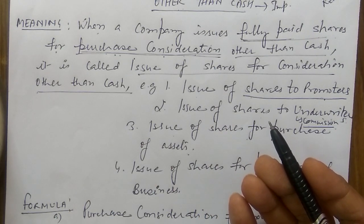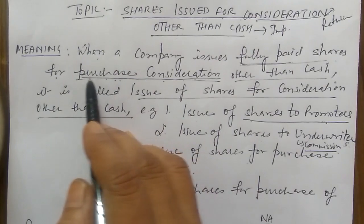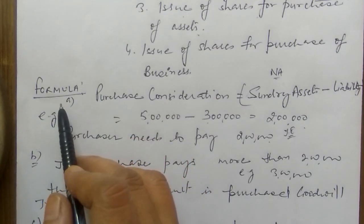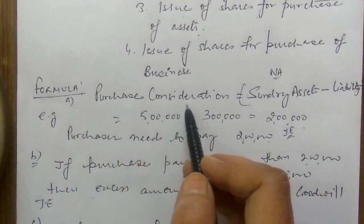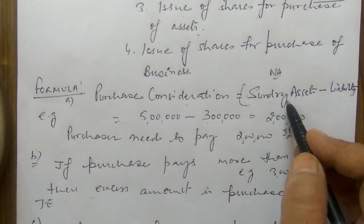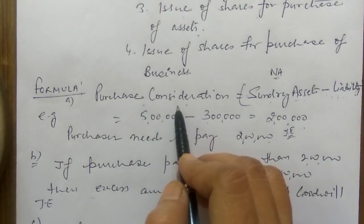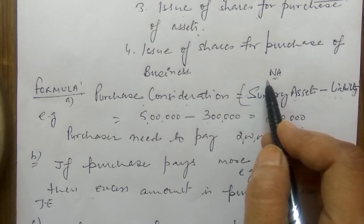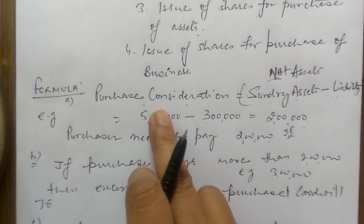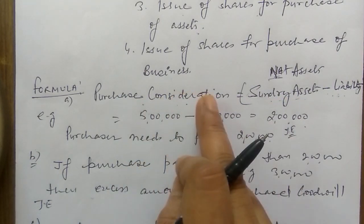Any of these four cases can appear in your exam paper, and we will make entries for all of them. Now, 'purchase consideration' is a very important term. Purchase consideration = Sundry Assets minus Sundry Liabilities, i.e., net assets. Some questions use the term 'net assets' — it means the same thing. The difference between assets taken over and liabilities assumed equals the purchase consideration.